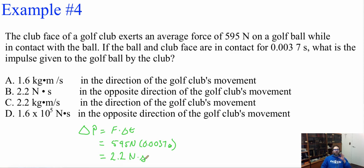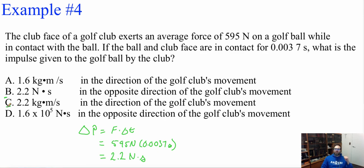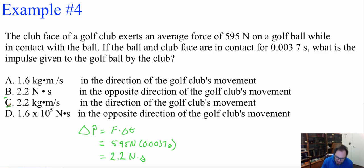Looking at the answer choices, we can narrow it down to B or C. But B sits in the opposite direction of the golf club's movement. The change in momentum goes from 0 in the same direction as the golf club's movement, so the answer must be C.